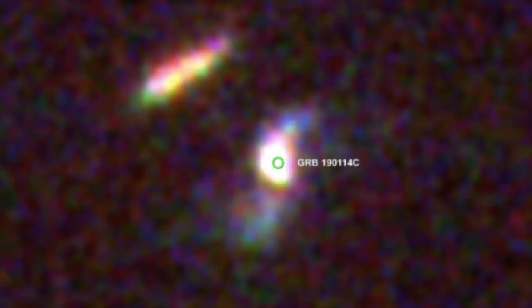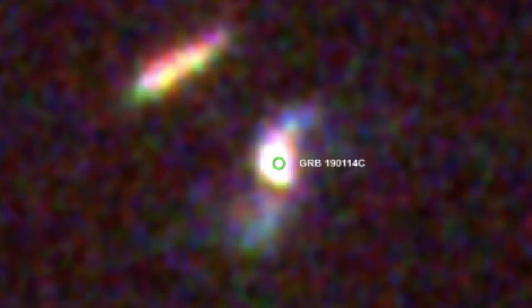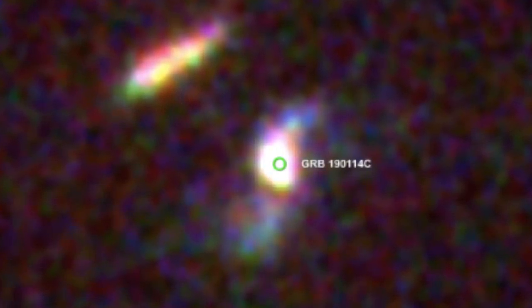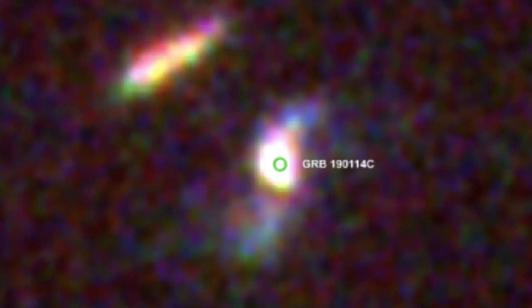It's reported that gamma-ray bursts emitted the brightest and most energetic light in the universe. Gamma-ray bursts are extremely energetic explosions, and the researchers have observed them in distant galaxies. They are the brightest electromagnetic bursts that occur in the universe.